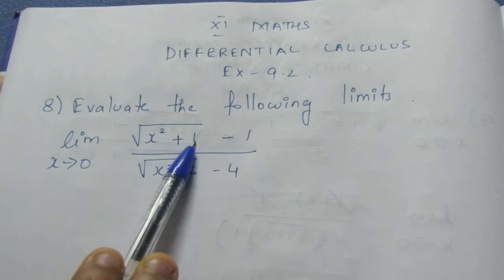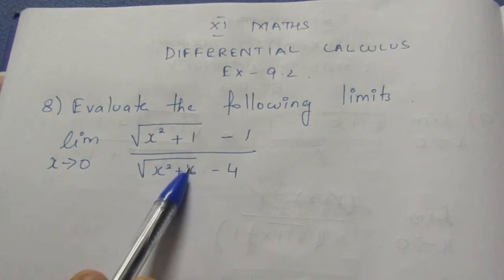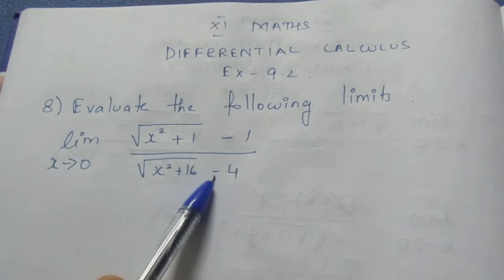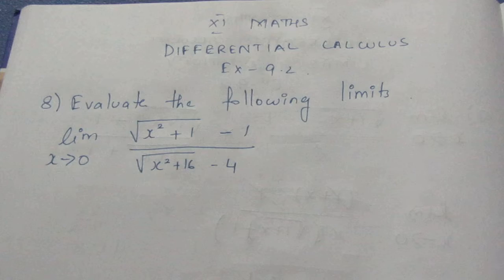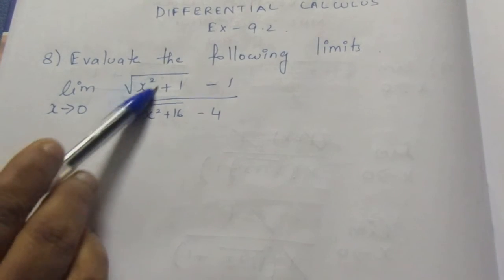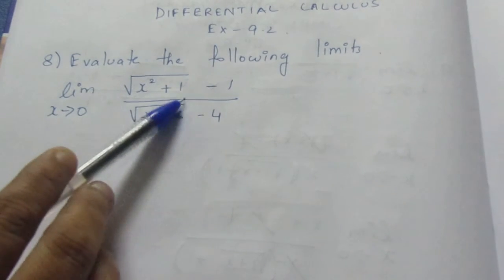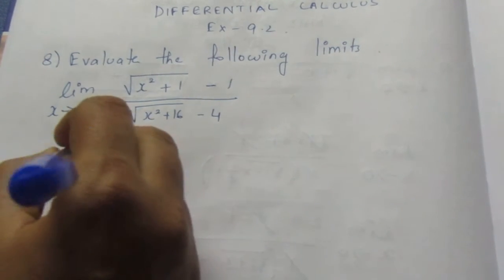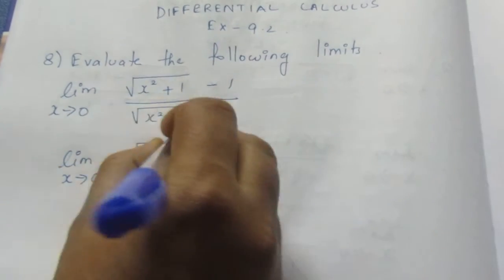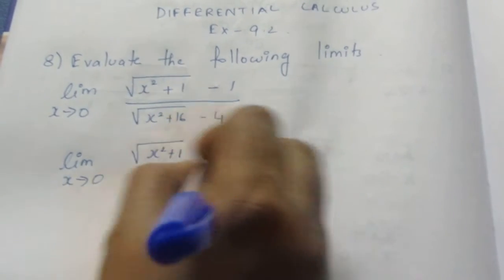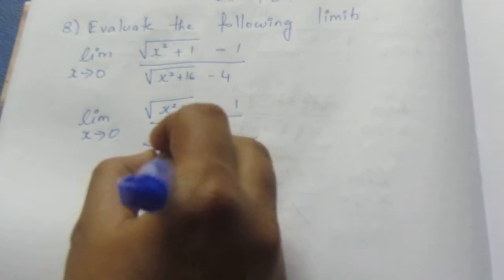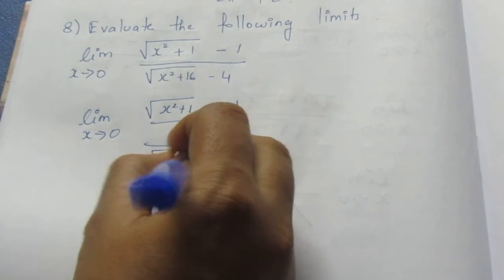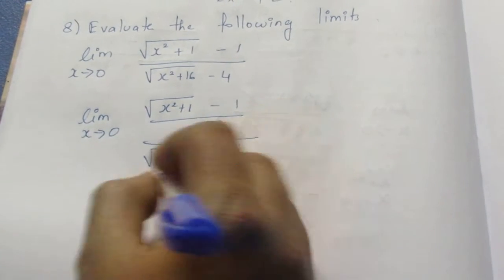In the numerator there is x squared plus 1 minus 1. We can write 1 as 1 squared and 4 as 4 squared, so x squared plus 4 squared minus 4. There are elements that follow the same pattern, so we divide using substitution.